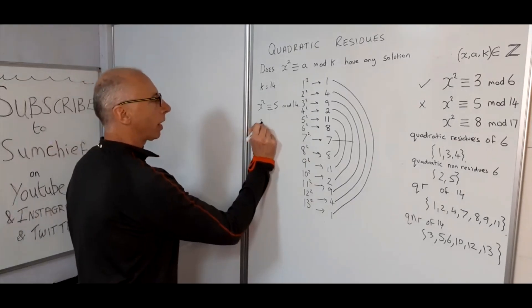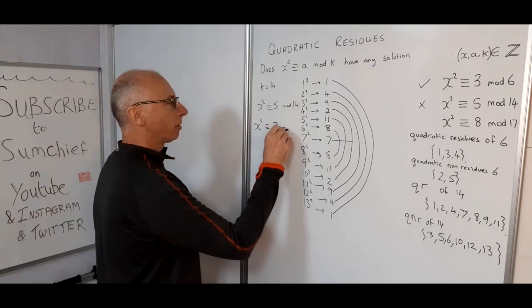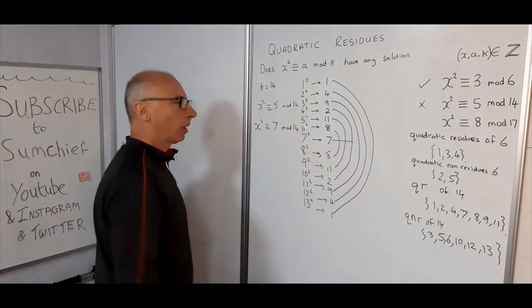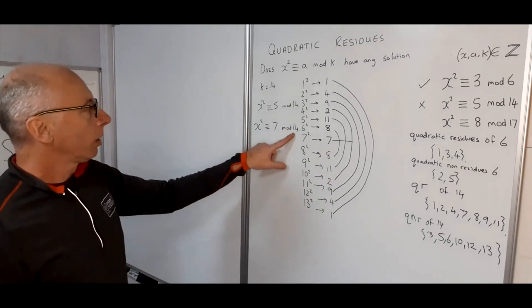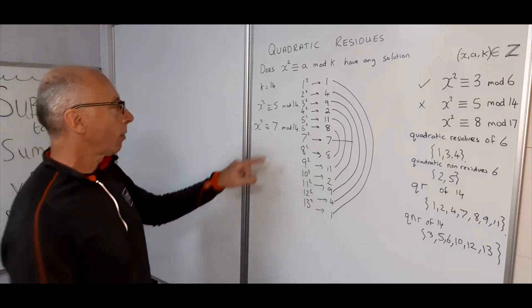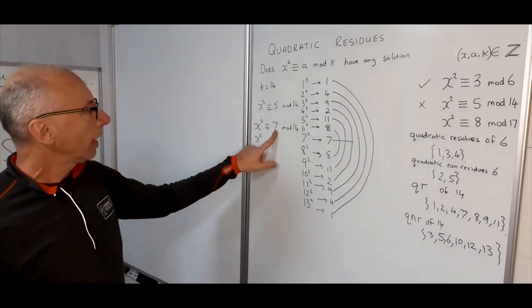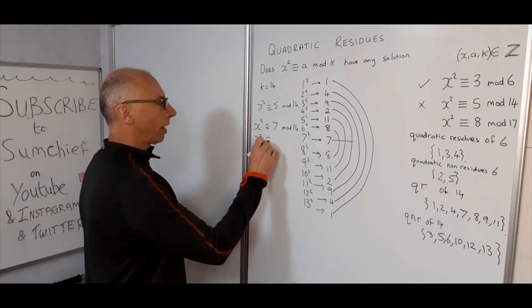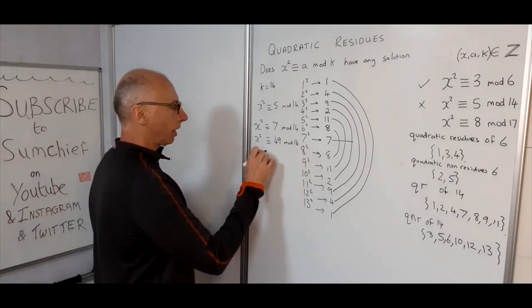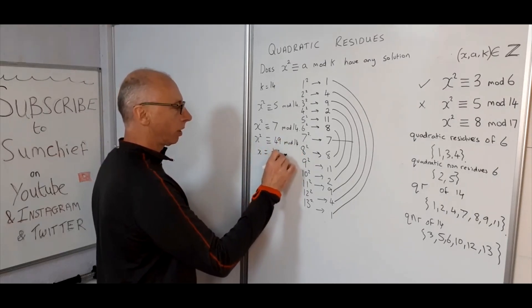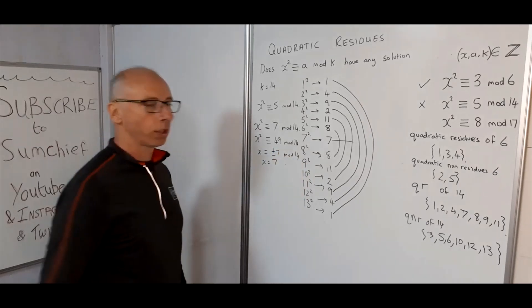Let's see what happens when x² ≡ 7 (mod 14). Notice 7 is the centre value of the quadratic residues. We need a multiple of 14 such that adding 7 gives a perfect square: 3×14 = 42, plus 7 gives 49. So x² ≡ 49 (mod 14), meaning x = ±7 (mod 14), therefore x = 7. That gives one solution.